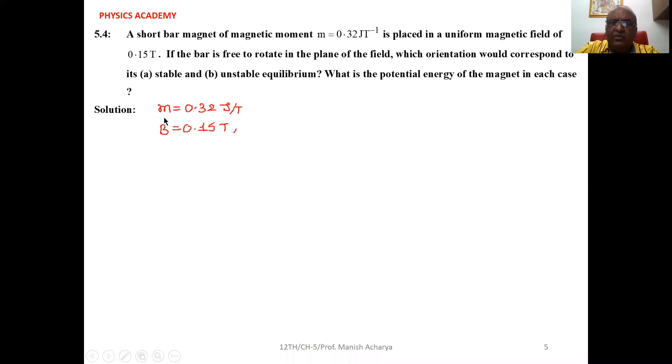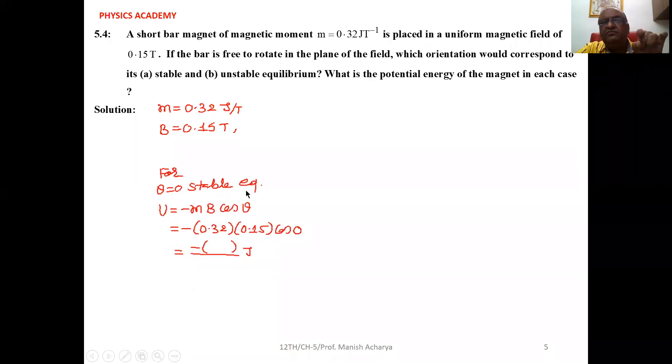The magnetic moment given is 0.32 joule per tesla, placed in a uniform magnetic field B = 0.15 tesla. For stable equilibrium, the angle between the magnetic moment and external field equals zero, meaning both are in the same direction. So for θ = 0, we have stable equilibrium.